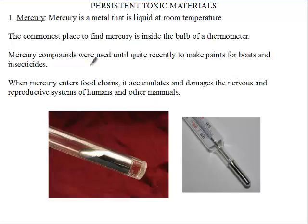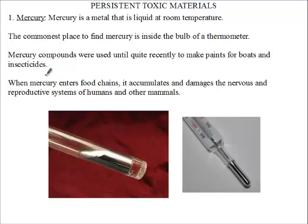Mercury compounds were used to make paint for boats and also in insecticides. The boats that were moving on rivers had Mercury paint, and even the insecticides used for killing insects also had Mercury.